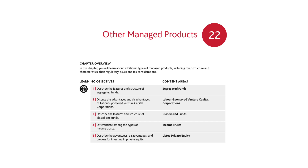Welcome to CSC Volume 2, Chapter 22: Other Managed Products. Overview. In this chapter, you will learn about the additional types of managed products, including their structure and characteristics, their regulatory issues, and tax considerations.